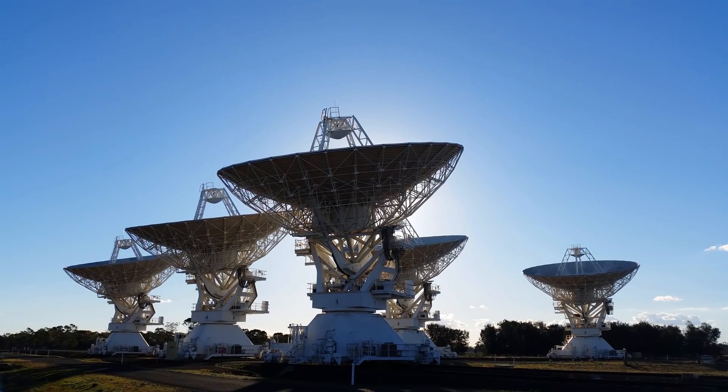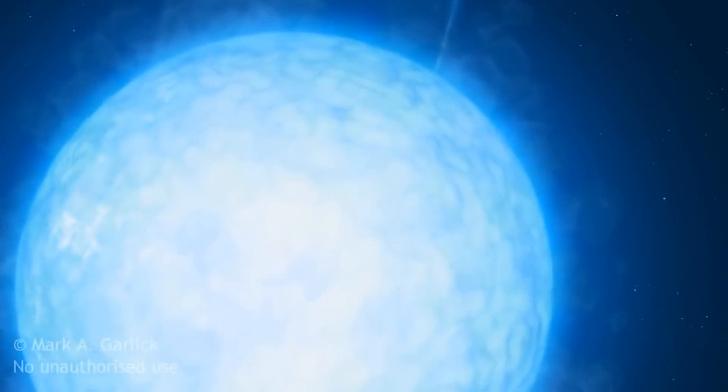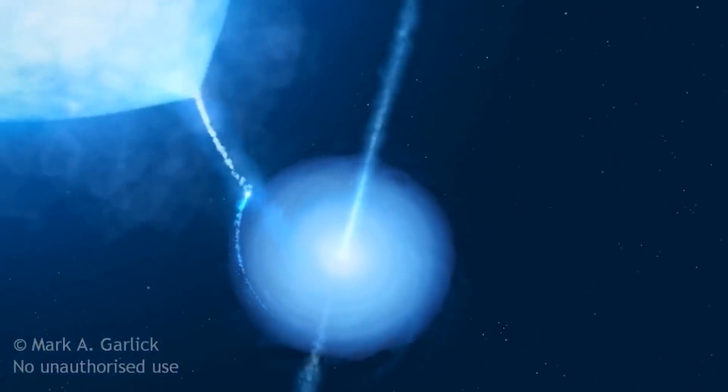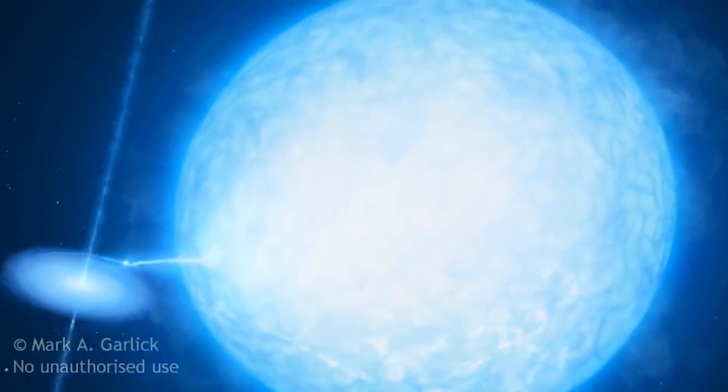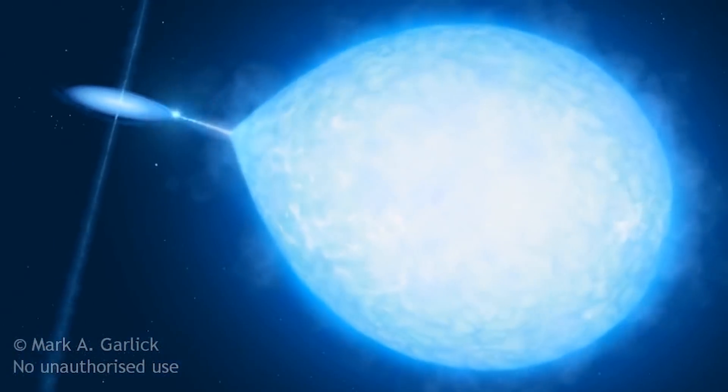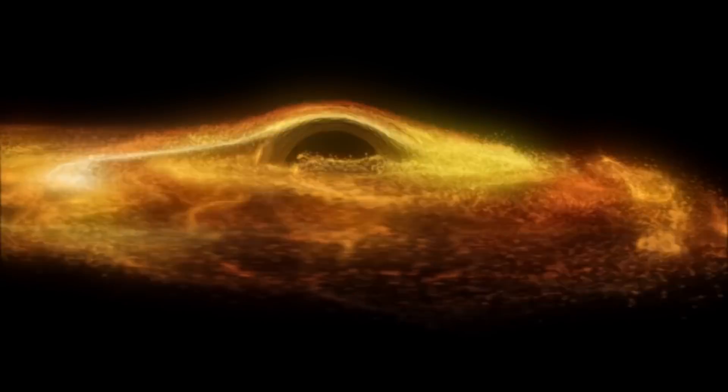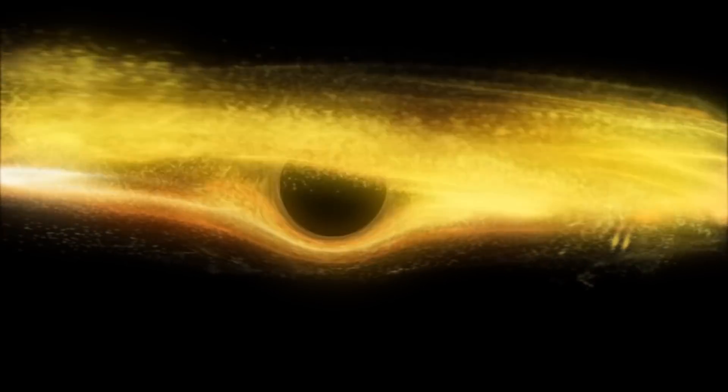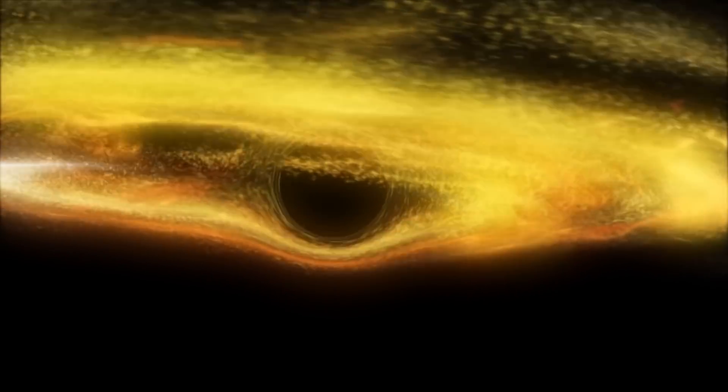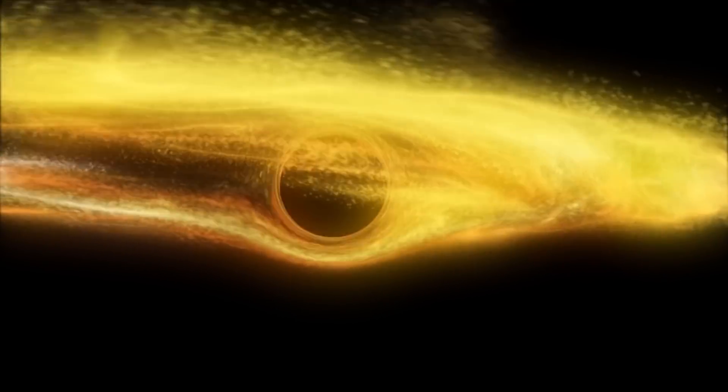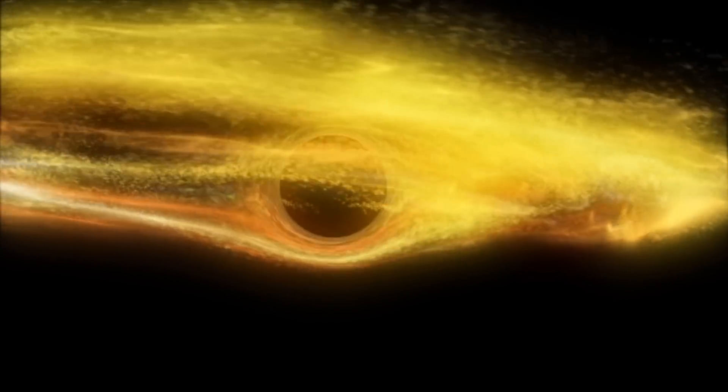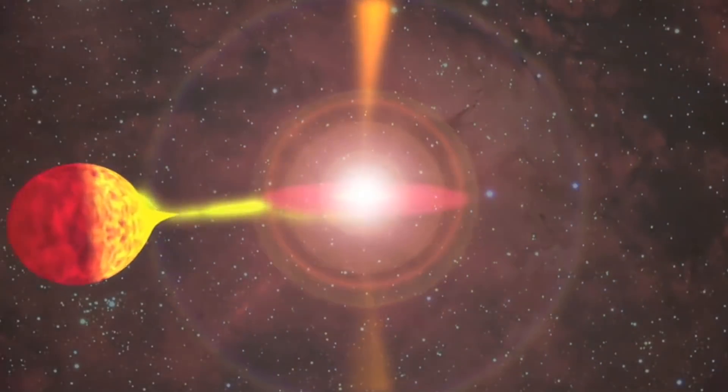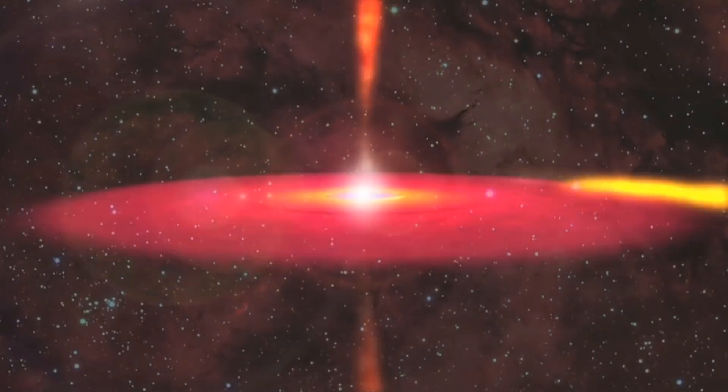Astronomers cannot directly see V616 Monocerotis, but we know it is there because we have seen the starlight getting distorted by the black hole. The next closest black hole is about 6000 light years away from us. It is about 15 times the mass of our sun and once again it is also in a binary system. The third black hole is also in a binary system.